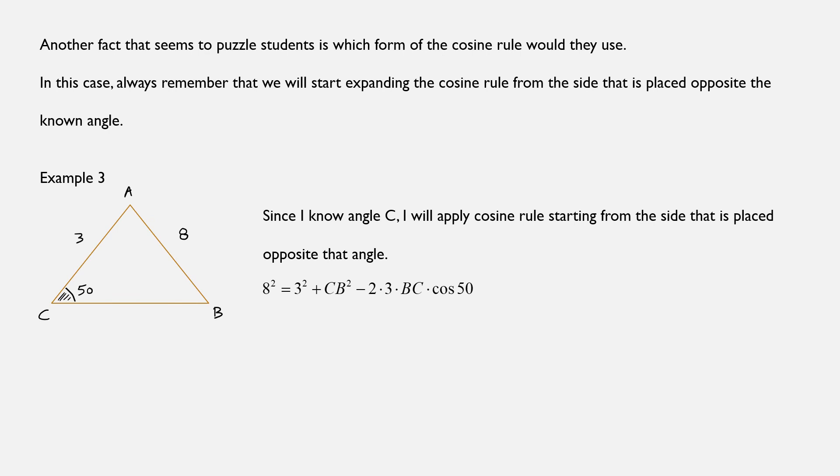Another fact now that seems to puzzle you is which form of the cosine rule you should use. In this case, always remember that we will start expanding the cosine rule formula from the side that is placed opposite the known angle. So for example, in the triangle we have in front of us, since I know the measurement of angle C, I will apply the cosine rule starting from the side that is placed opposite that angle.